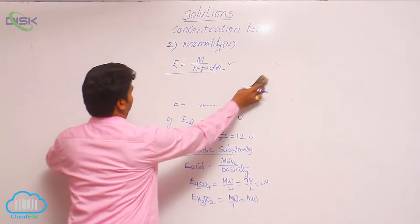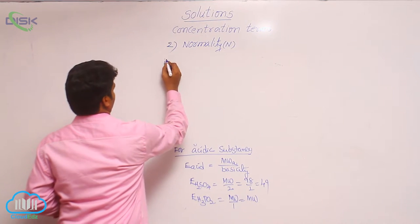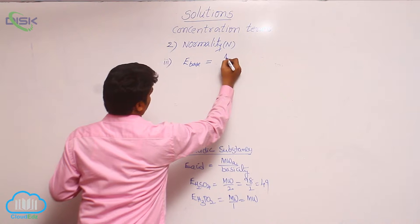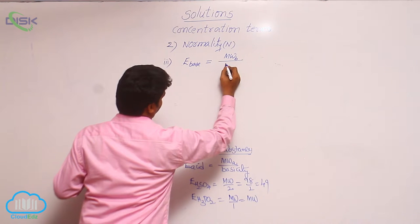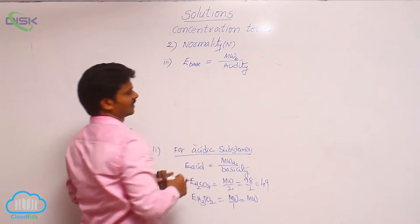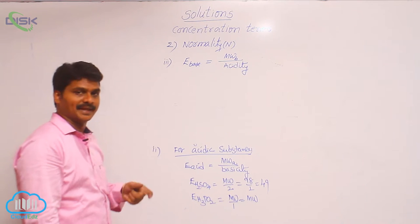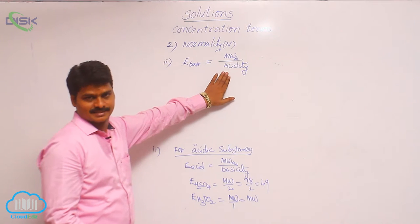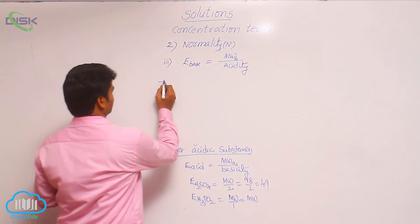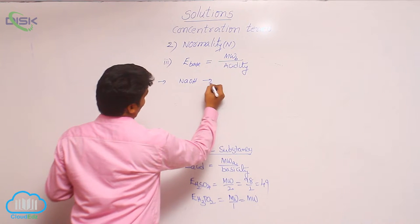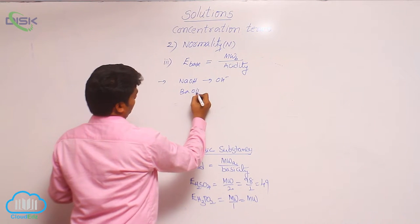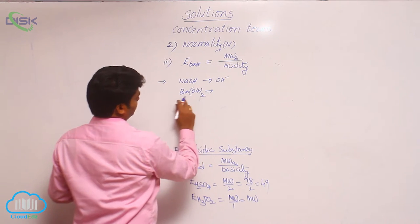Now, the third case: how to find out the equivalent weight of a base. For a base, it is molecular weight of base divided by its n-factor. Here, in place of n-factor we use the word acidity. For an acid we use basicity; for a base we use acidity. Acidity means the number of replaceable OH groups of a base. For example, NaOH can give only 1 OH⁻ ion, so its acidity is 1.